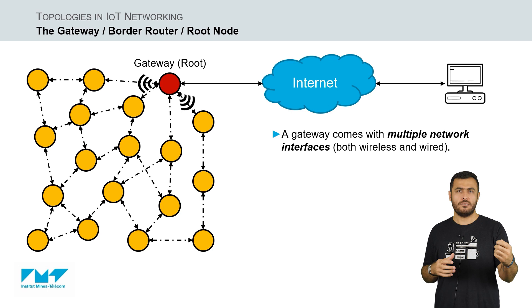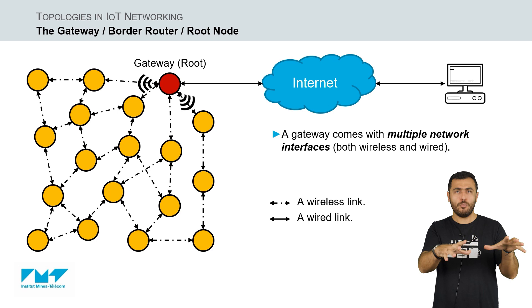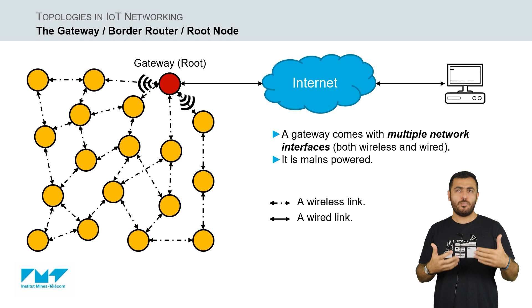A gateway typically comes with multiple network interfaces: the wireless interface to communicate within the low-power wireless network, and a wired interface to connect the low-power wireless network to either a local computer or to the outside world, the Internet. Therefore, a gateway is typically mains powered in order to be able to run more powerful software than the sensor or actuator nodes.